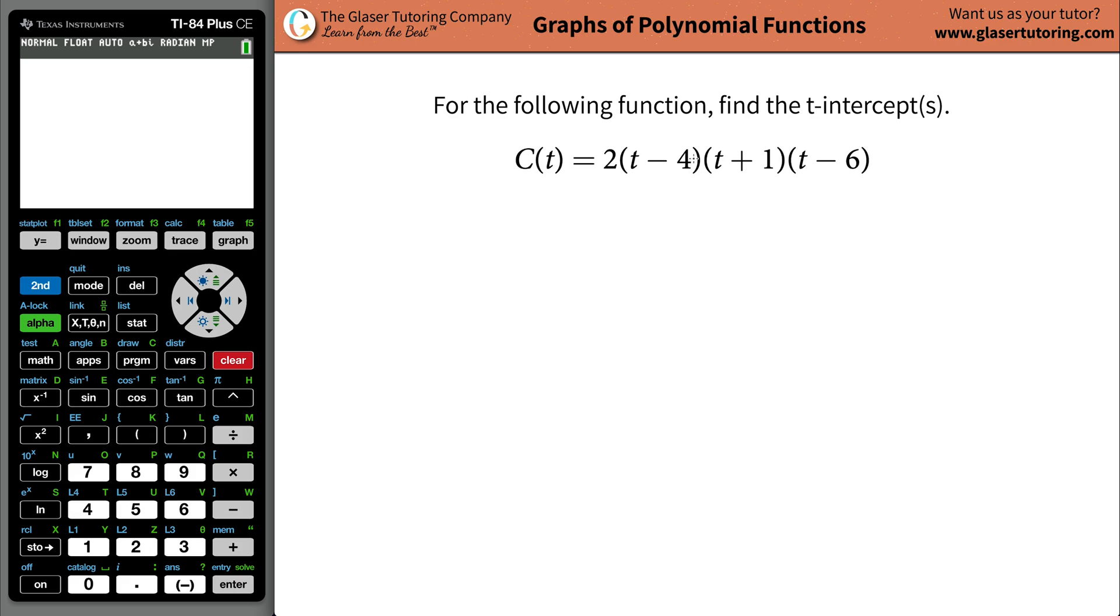Now remember the logic. So what does it mean to be a t intercept? Pretend you have a graph and t would be written on the horizontal axis and the C(t), the function's value, would be written on the vertical axis.